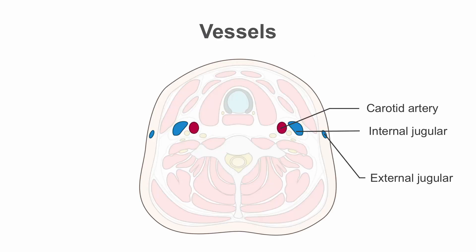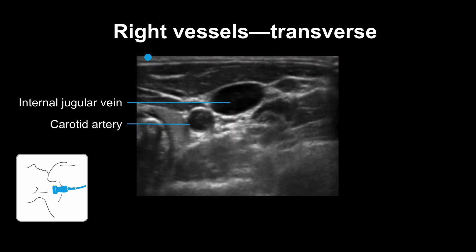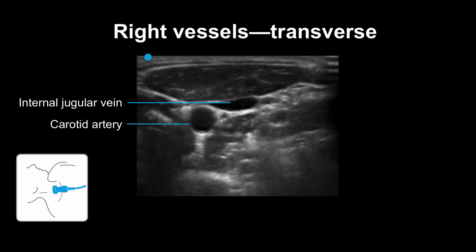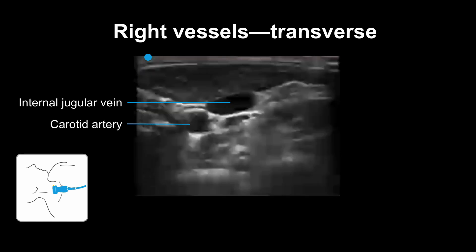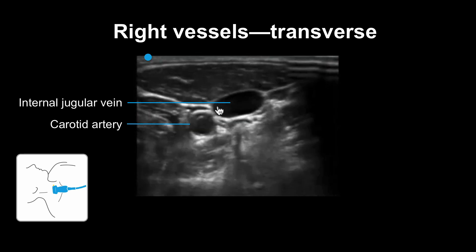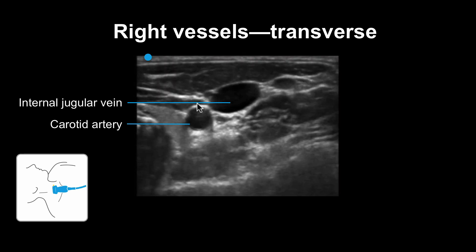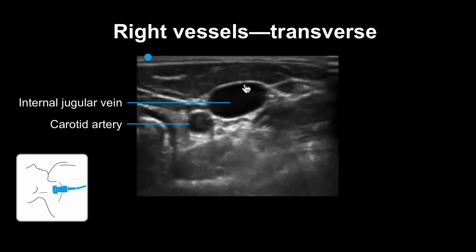Let's take another look at the vessels in transverse or short axis. Here is a view of the carotid artery and the internal jugular vein in transverse view. You can see the internal jugular vein is just lateral and a little bit superior to the carotid artery. Since we're in the transverse view, the vessels look more rounded or oval as the view takes a cross-sectional cut. The artery has thicker walls and is pulsatile, whereas the vein appears relatively more oval, thin-walled, and is compressible.